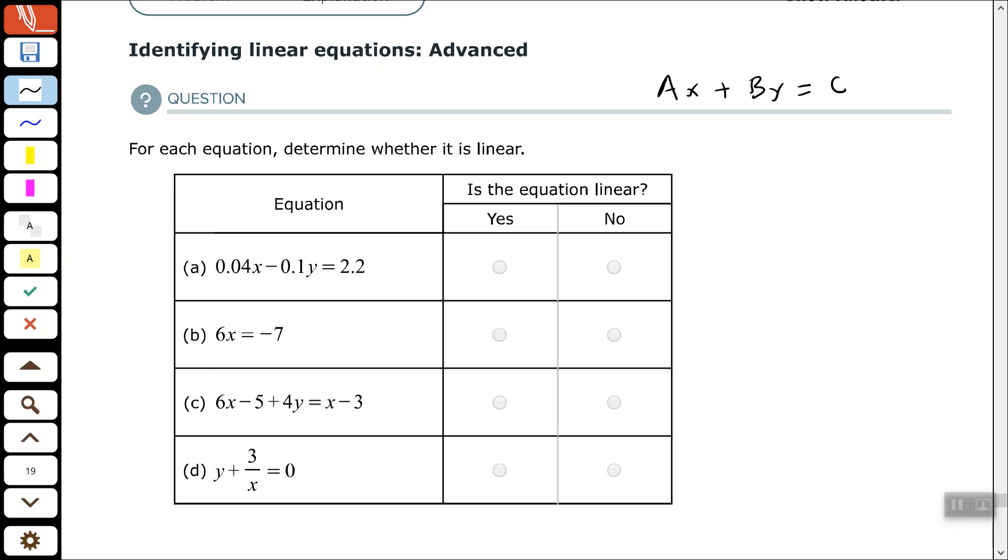So that's the definition of a standard form of a linear equation. A, B, and C are integers, and A and B cannot both be equal to zero. One can, but not both of them.